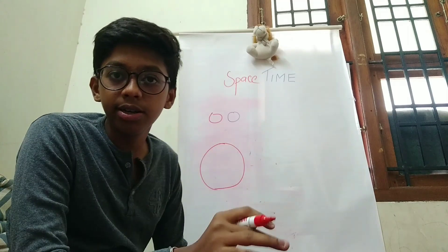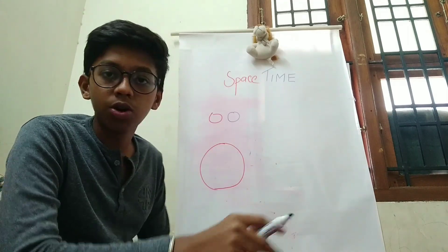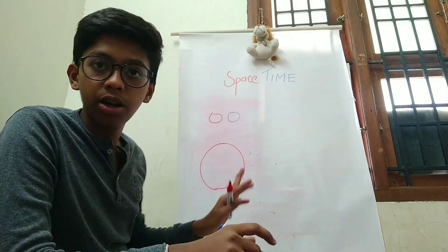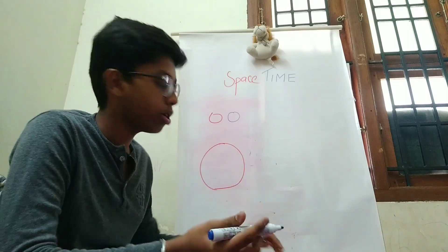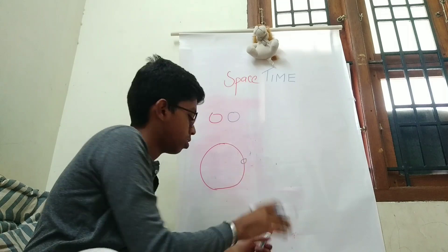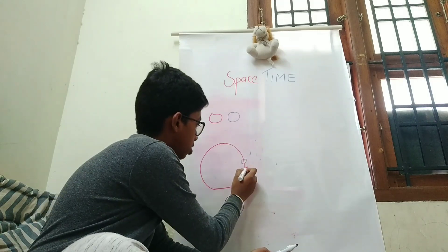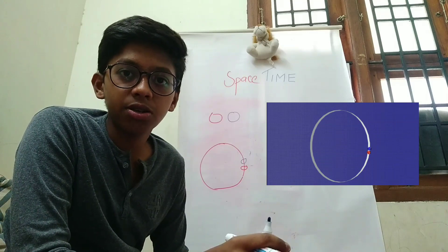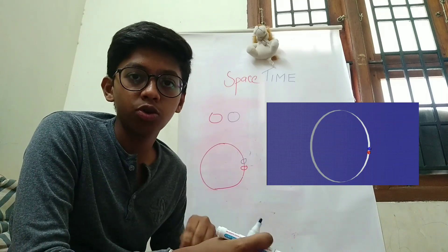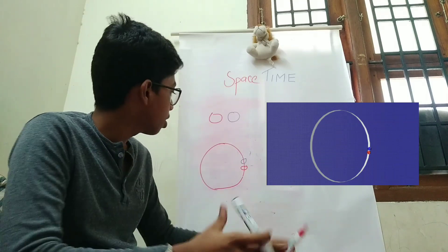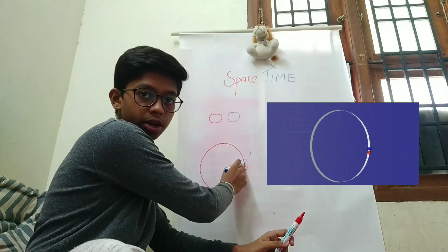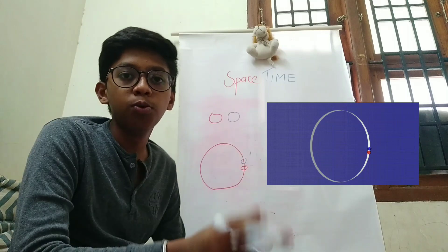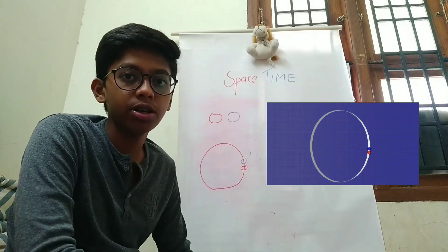Let's do two creatures. Let's do a two dimensional circle. Let's do a different color — a blue color. This black color one will stick to red color.